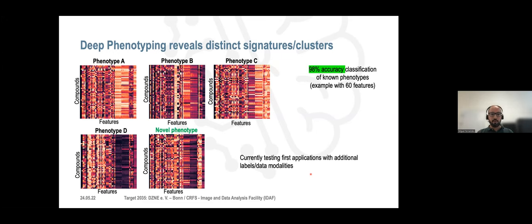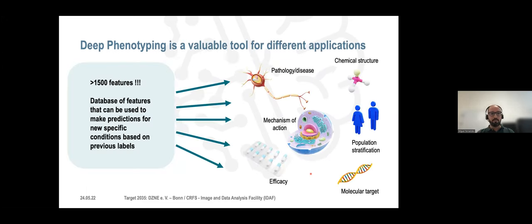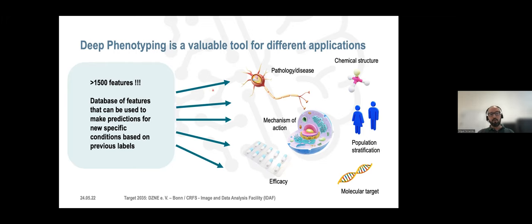Here's an example of one of the applications we used deep phenotyping for. We knew that there were four phenotypes A, B, C, and D — and the signatures are very different from each other, so we can detect different phenotypes using only 60 features from more than 1500. The power of the approach is revealed here: with this resolution we can find novel phenotypes that we as biologists had not predicted to be there. We are currently testing first applications with additional labels, and additional data modalities can be integrated — we are developing a general approach not specific to a particular question.